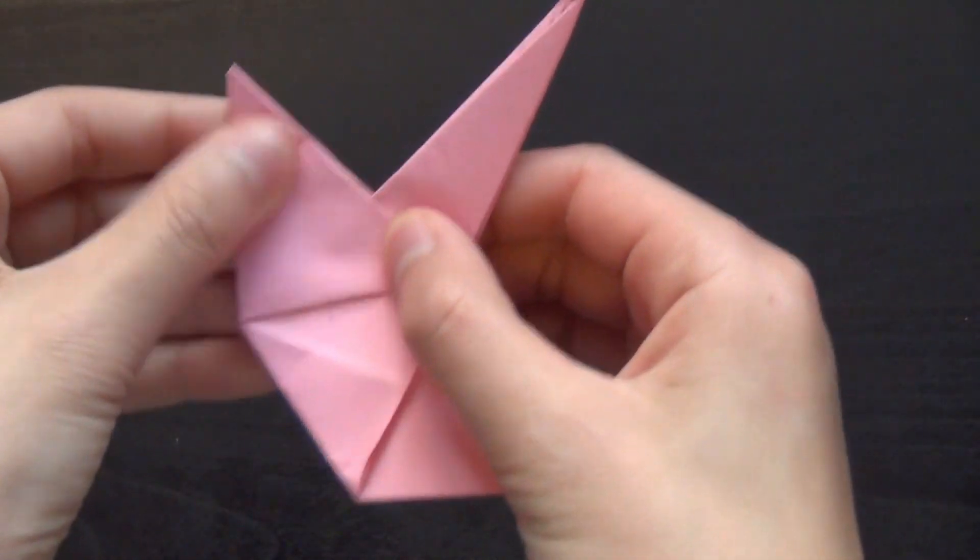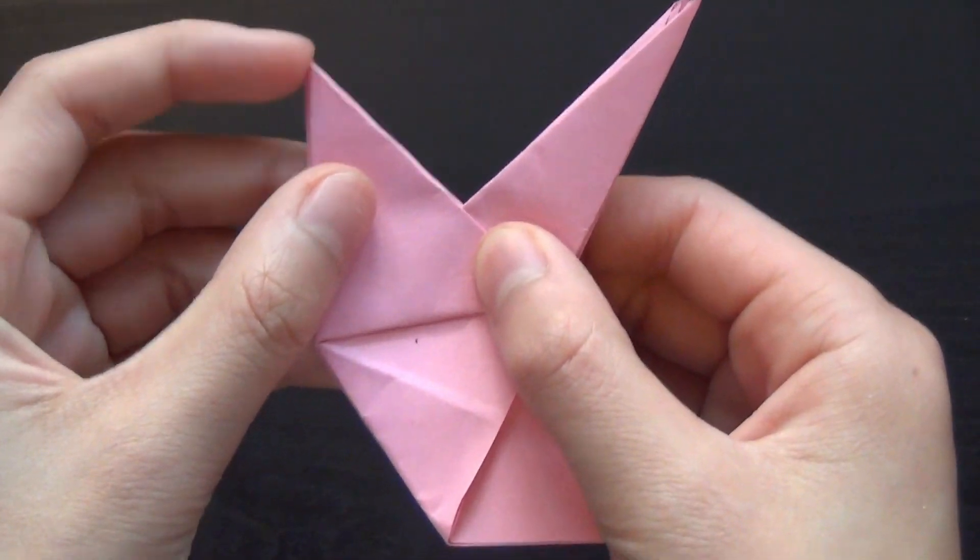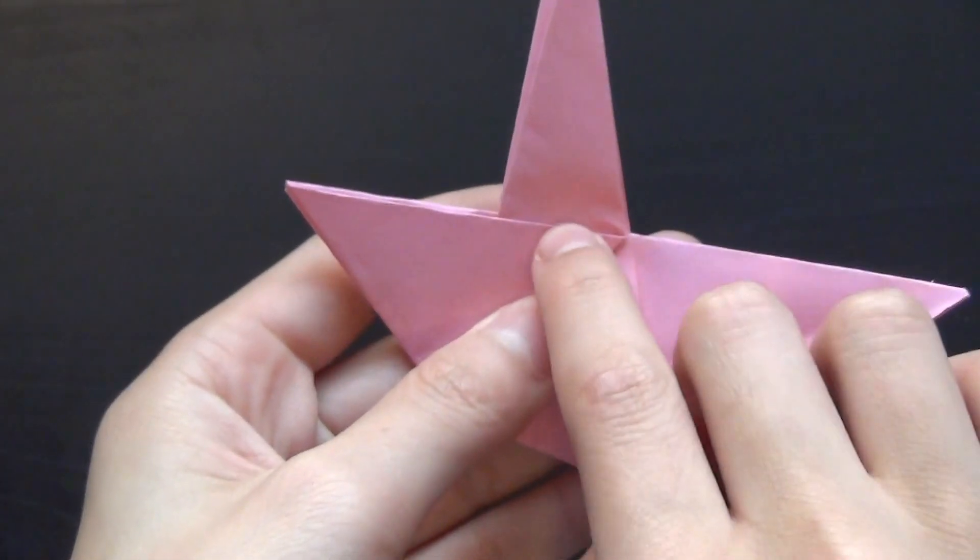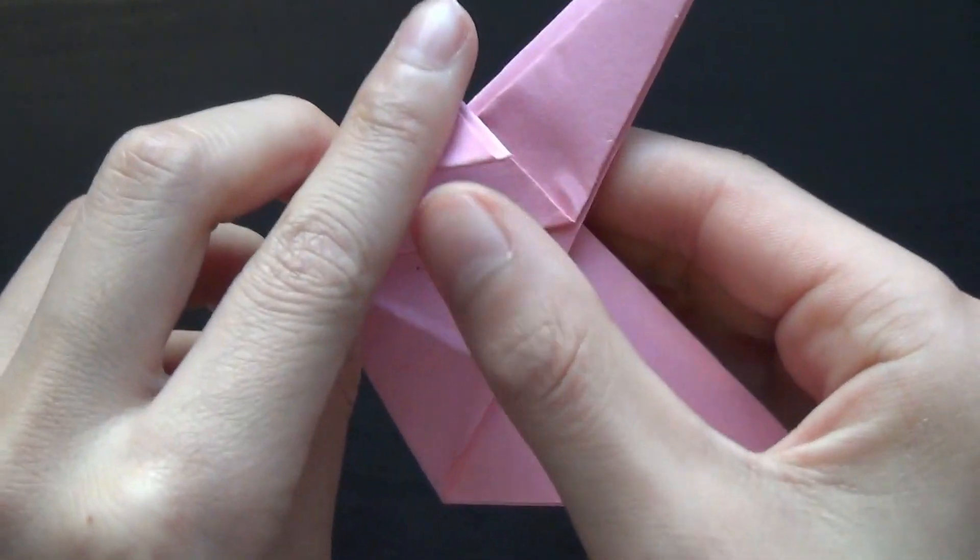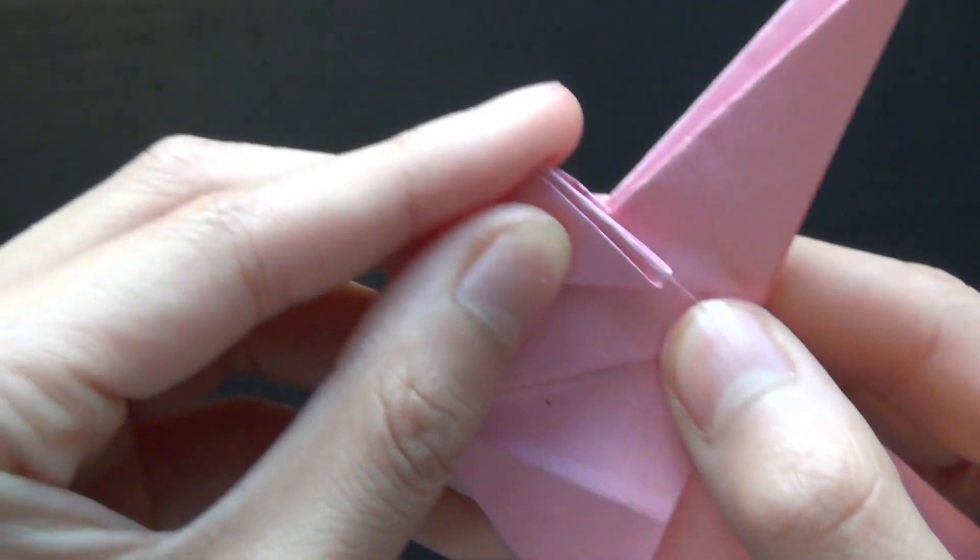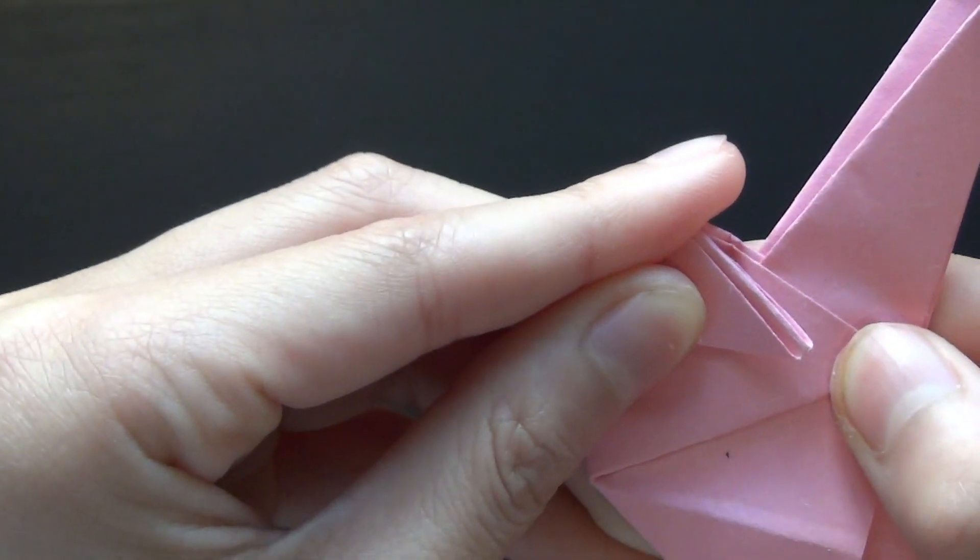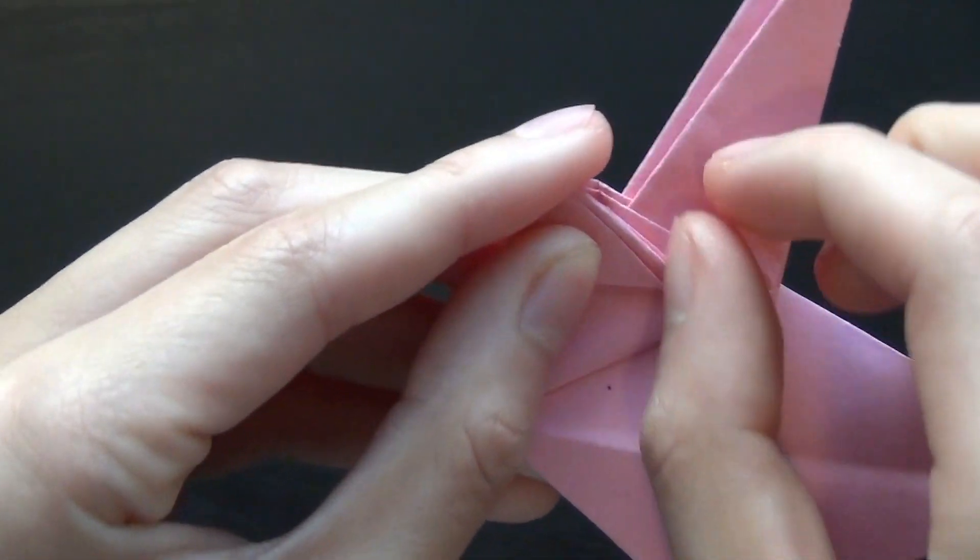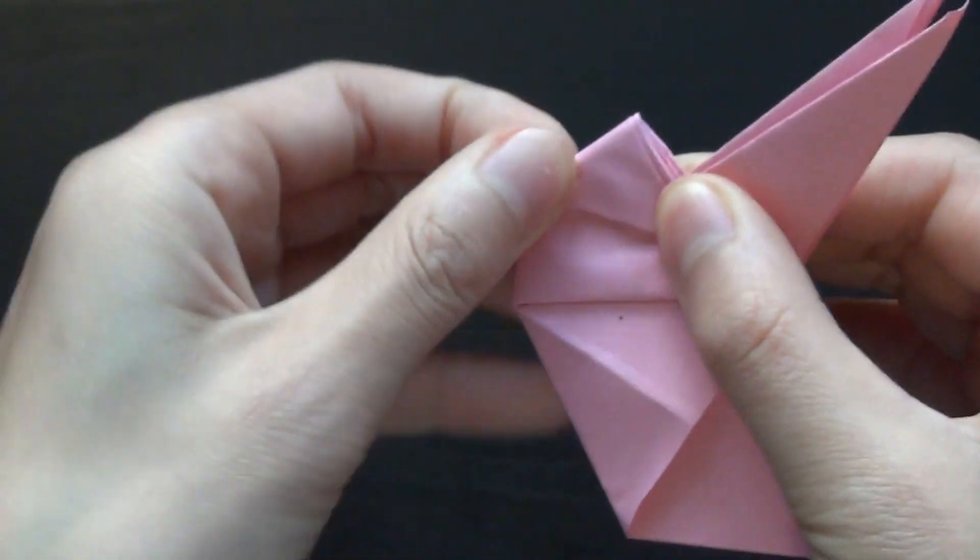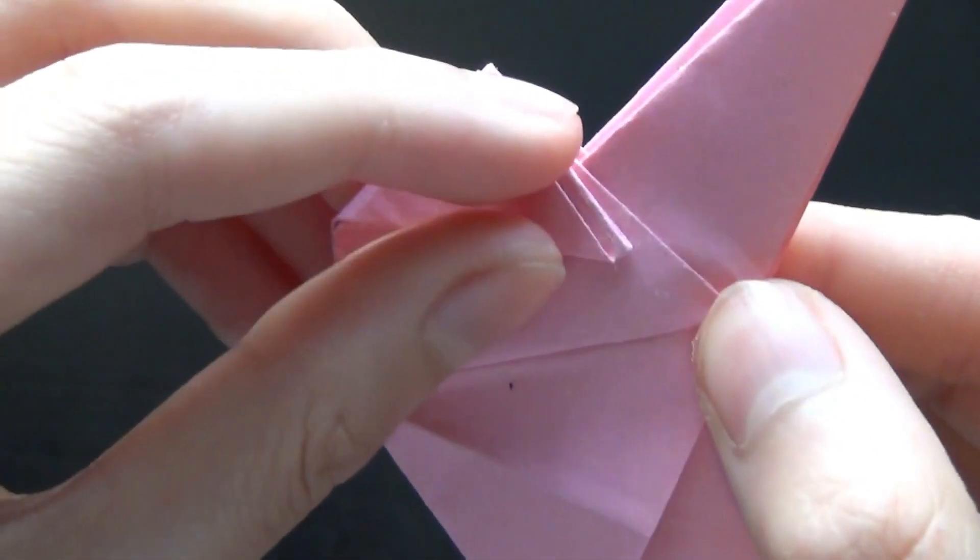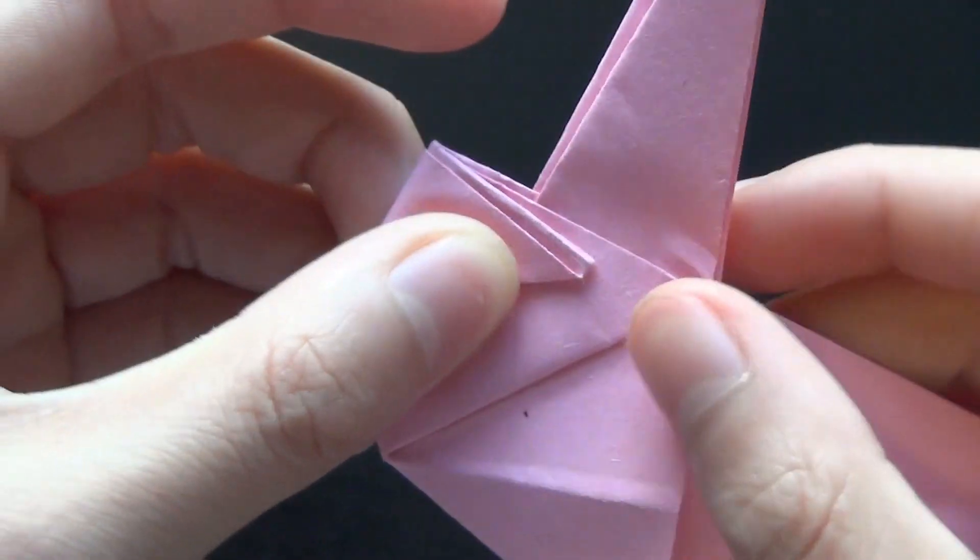Now you want to fold this tip right here to about the middle of this, and point it a tiny bit, about like a millimeter down, so that it's almost touching this but not quite.